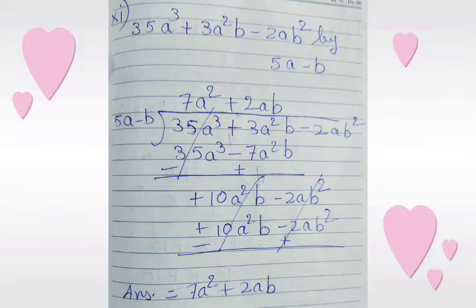We copy down the third term, that is minus 2ab squared. After multiplying 5a minus b with 2ab, we get plus 10a squared b minus 2ab squared. After changing the sign, we can cancel both terms. The answer is 7a squared plus 2ab.